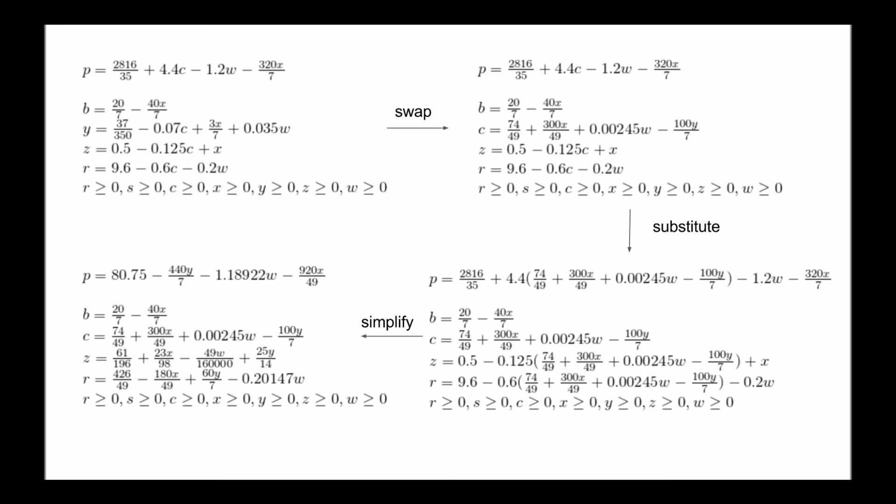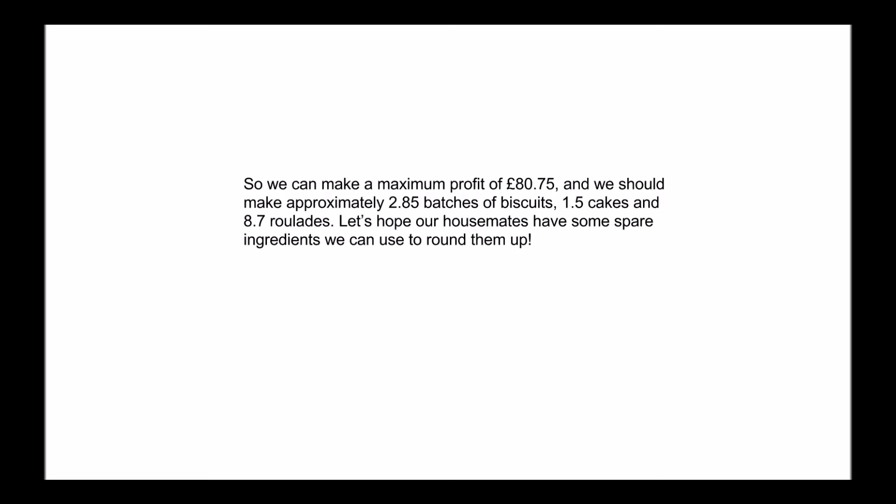If we now set all non-basic variables — x, w, and y — to 0, then we get p equals 80.75, b equals 20 over 7, c equals 74 over 49, and r equals 426 over 49. This means we can make a maximum profit of 80 pounds and 75 pence, and we should make approximately 2.85 batches of biscuits, 1.5 cakes, and 8.7 roulades.